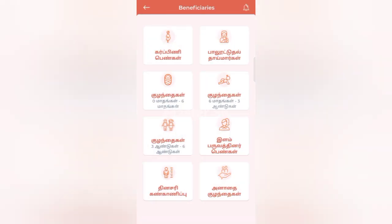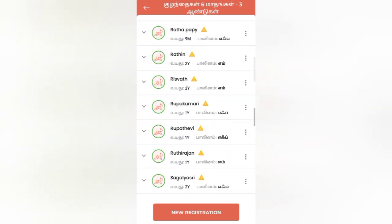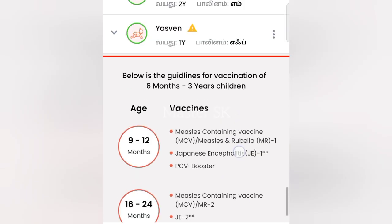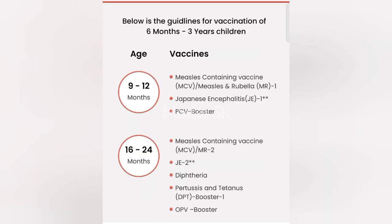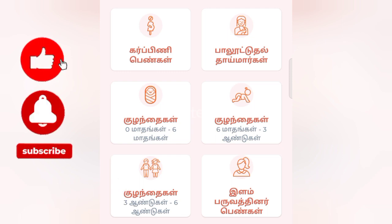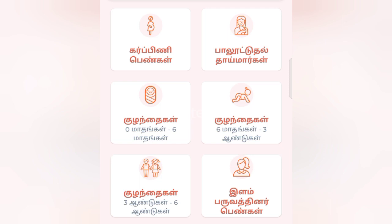I am going back to the next page and clicking on the name list. Open the name list and go to the last page. Below is the guideline for vaccination of 6 months to 3 years. You can get the vaccine details, check the details, and confirm them.